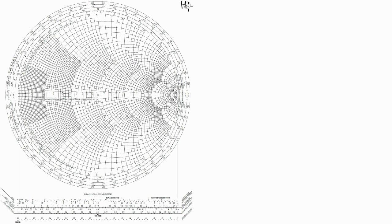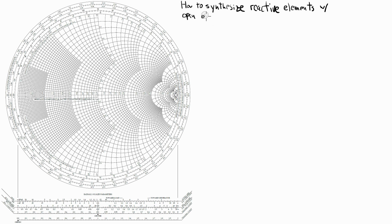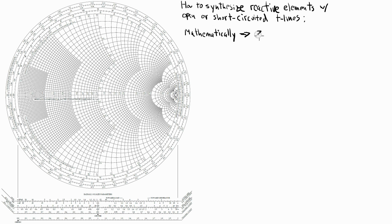Now let's talk about how to synthesize reactive elements with just open or short circuited transmission lines, which is an amazing part of microwave theory. If you think about it, you can synthesize inductors and capacitors with just copper — a piece of copper trace. First I'm going to show that this is possible using math, and then we'll take a look at it on the Smith chart.